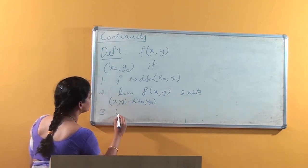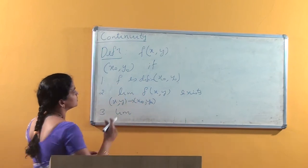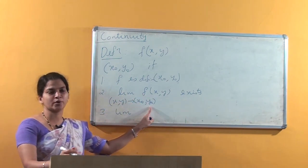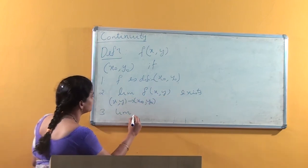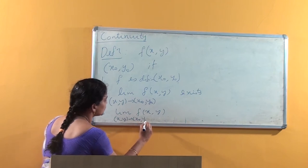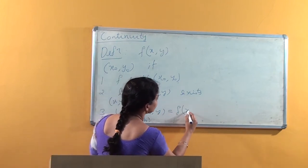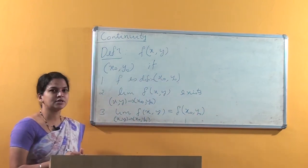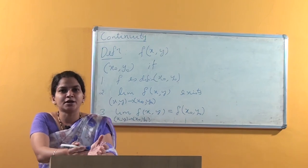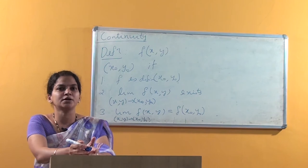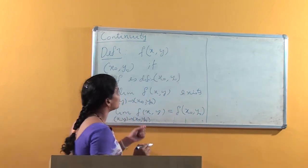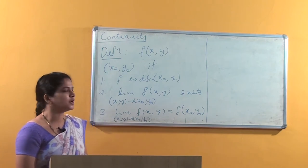The last condition: this limit should be equal to the function value at that point (x0, y0). That is, the limit of f(x, y) as (x, y) approaches (x0, y0) should be equal to f(x0, y0). If these three conditions are satisfied, then we say that f is continuous at the point (x0, y0). The function f is a continuous function if it is continuous at every point in its domain of definition.